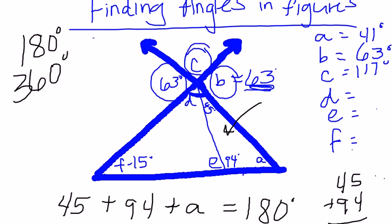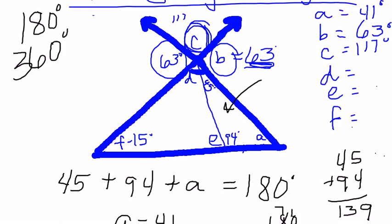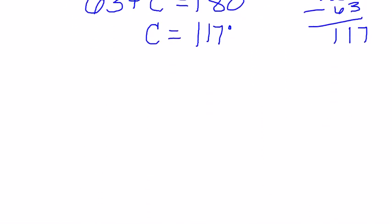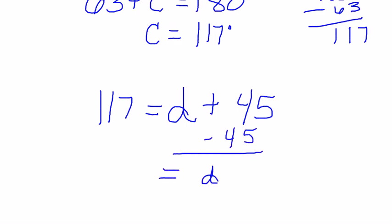C, which I just found is 117, is going to equal the vertical angle across from it, which includes D plus 45 degrees. So 117 equals D plus 45. I'm going to subtract 45 from both sides, so D equals 72.